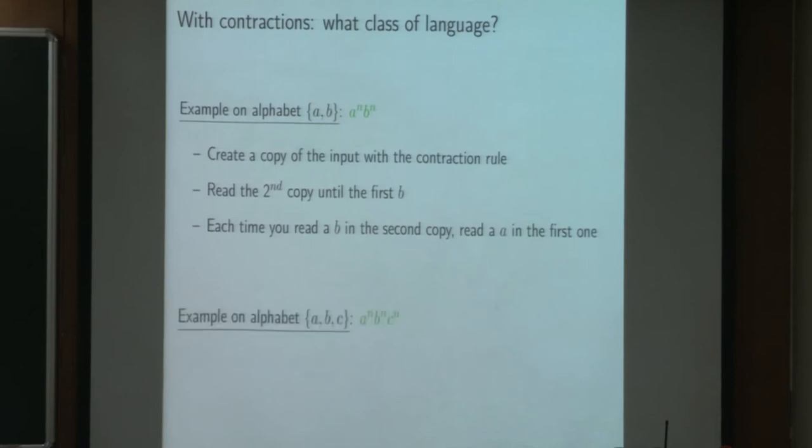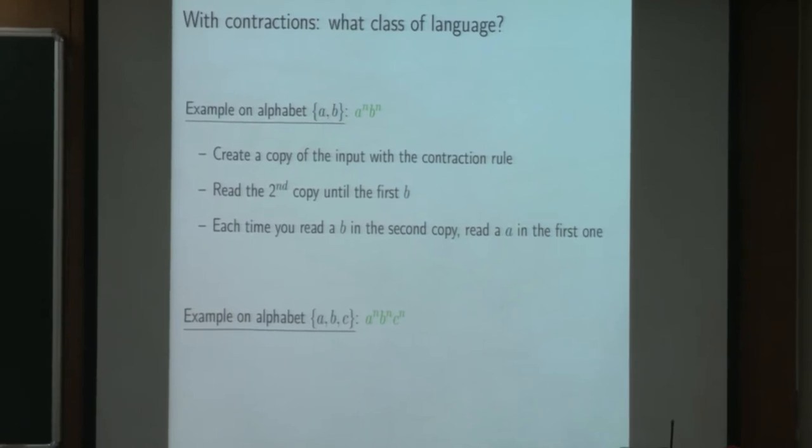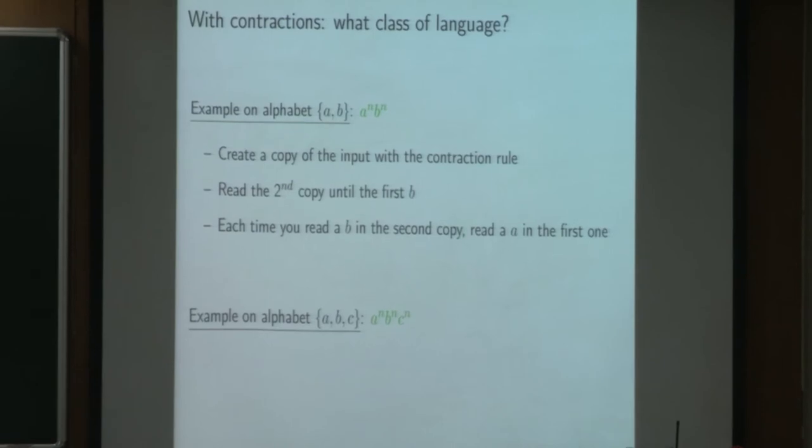And with the same kind of thing, but only by making a third copy at the beginning, we can even do A^n B^n C^n, which is not even context-free. So we can see that we have a lot of expressivity with this proof system.